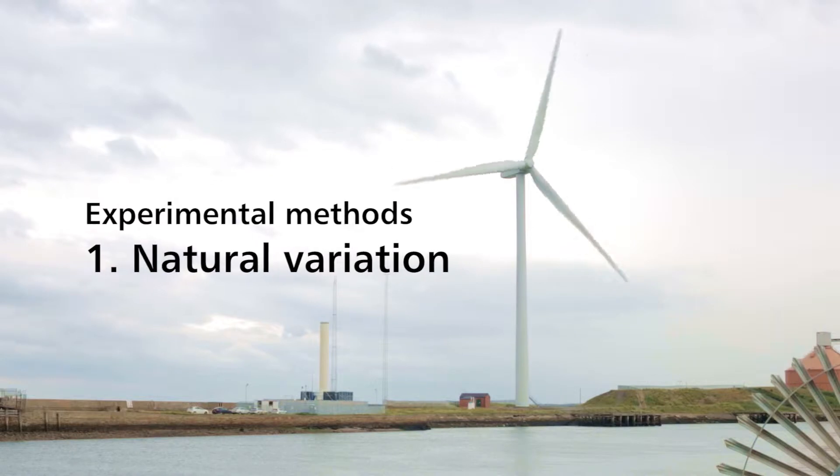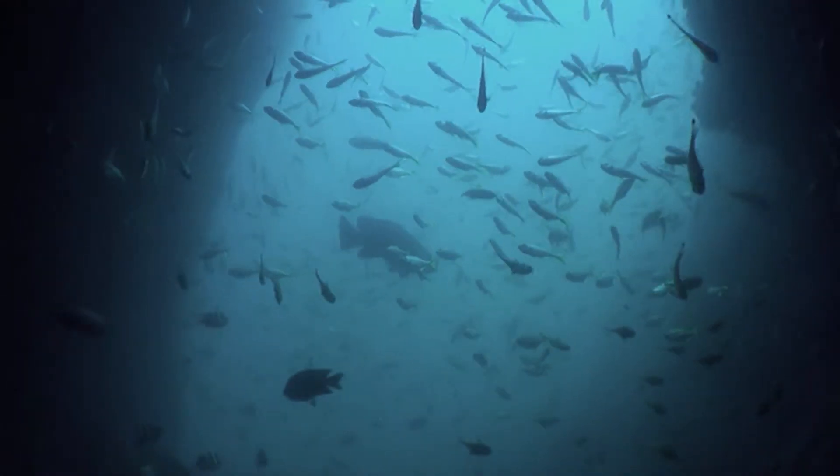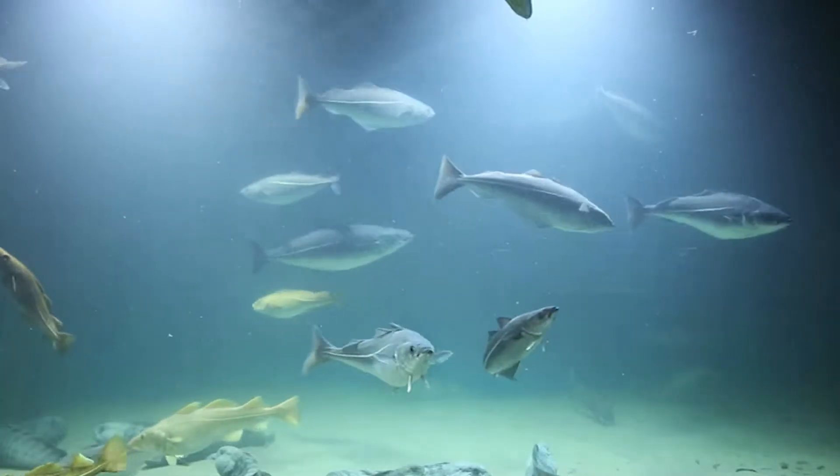One approach is to look at natural variation — to go out and collect observational data of animals in their natural habitat around real sound sources. The big advantage of that approach is that it's ecologically valid; the animals are behaving naturally in their own environment. The disadvantage though is that you often can't isolate the effect of noise itself, as variation could be caused by all sorts of other things that differ in the conditions you've been looking at.